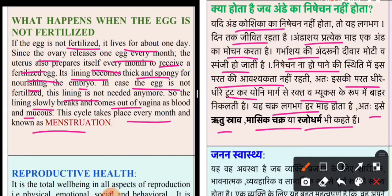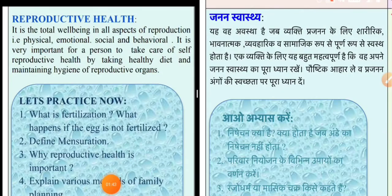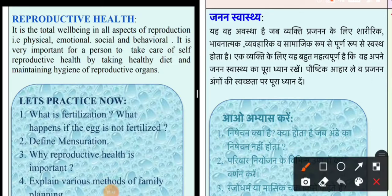Next is reproductive health. Why is it important? It is a total well-being in all the aspects of reproduction — that is physical, emotional, social and behavioral. It is very important for a person to take care of self-reproductive health by taking a healthy diet.